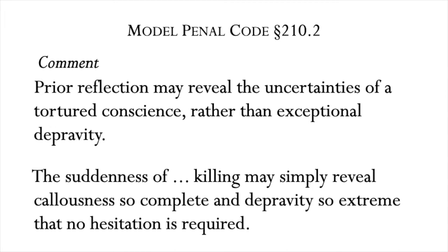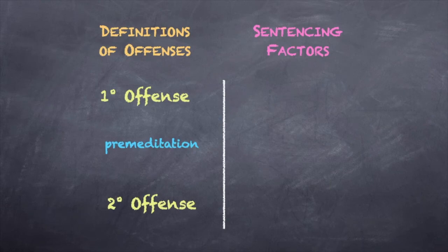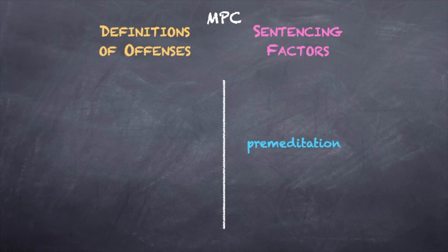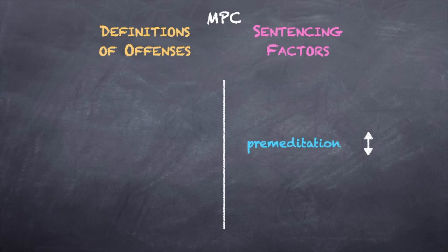The suddenness of killing may simply reveal callousness so complete and depravity so extreme that no hesitation is required. What the Model Penal Code would have the states do can be visualized this way: from the Model Penal Code perspective, degrees of depravity matter, but premeditation doesn't mark those degrees accurately. Rather than try to draw the line another way, the Model Penal Code simply does away with it and makes premeditation a sentencing factor for the sentencer to weigh in deciding upon a punishment. Depending on the wider set of facts which the sentencer is allowed to weigh, premeditation might aggravate or mitigate the seriousness of the offense.